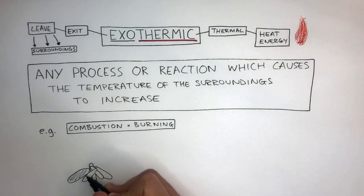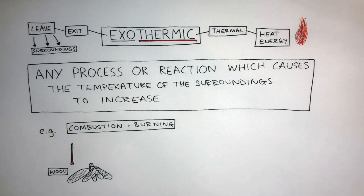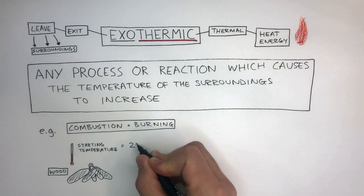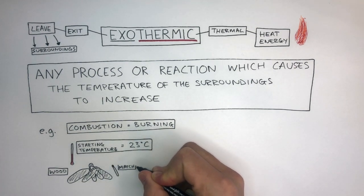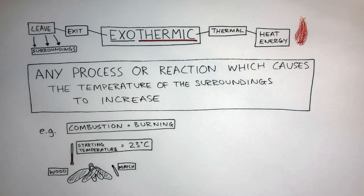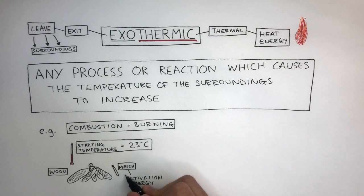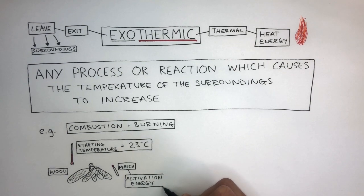For combustion to take place, a fuel is needed, and in this case it's going to be wood. Before it's set on fire, the starting temperature is 23 degrees Celsius. A match is used to provide the initial energy needed to start the reaction. This is specifically called the activation energy, and this is the minimum amount of energy required to start a reaction.